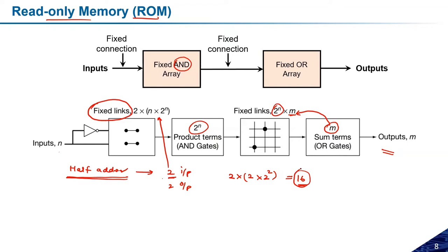These sixteen are the maximum possible links, but which of those links will be connected and which will not depends on what function we need to implement. This number comes from the kind of circuit we are implementing and how many inputs and outputs it has.